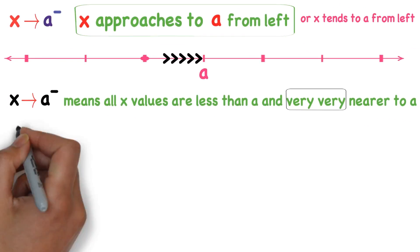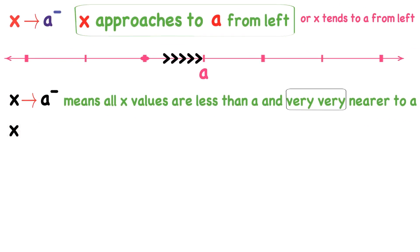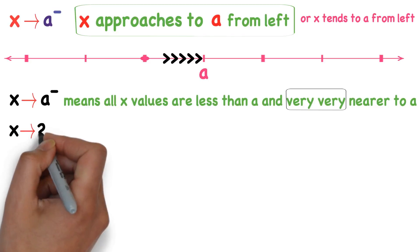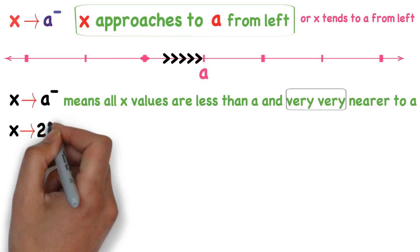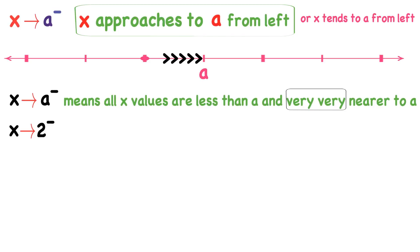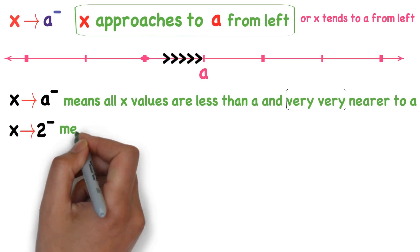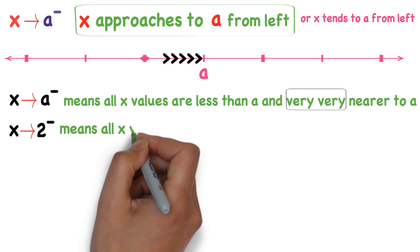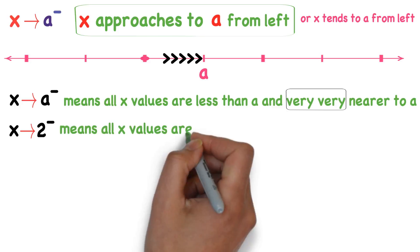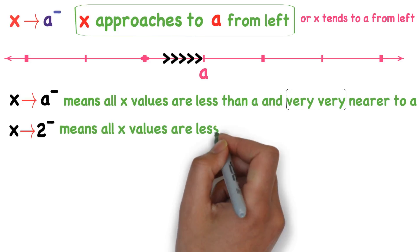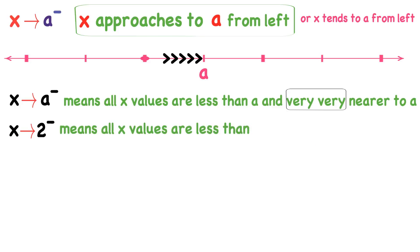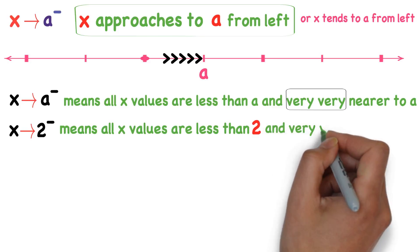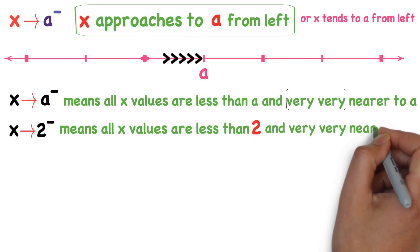Let me explain this with an example. X approaches to a from left means all x values are less than a.